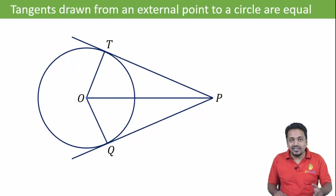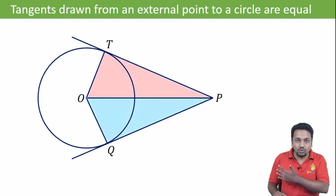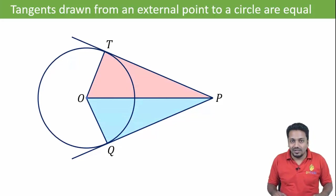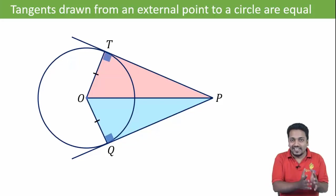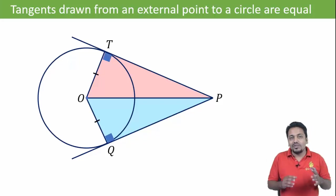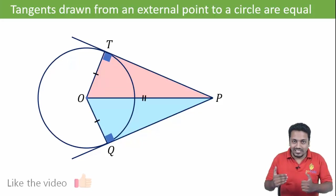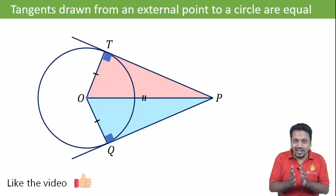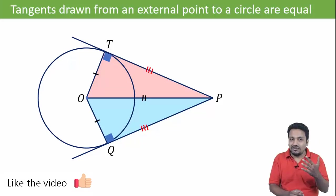Join the two radii and also join OP. Now take these two triangles. OQ is equal to OT as they are radii. Then we have two 90-degree angles as the radius is perpendicular to the tangent. Also, OP is common between the two triangles. So these triangles are congruent using RHS congruency, and we can say PT is equal to PQ.